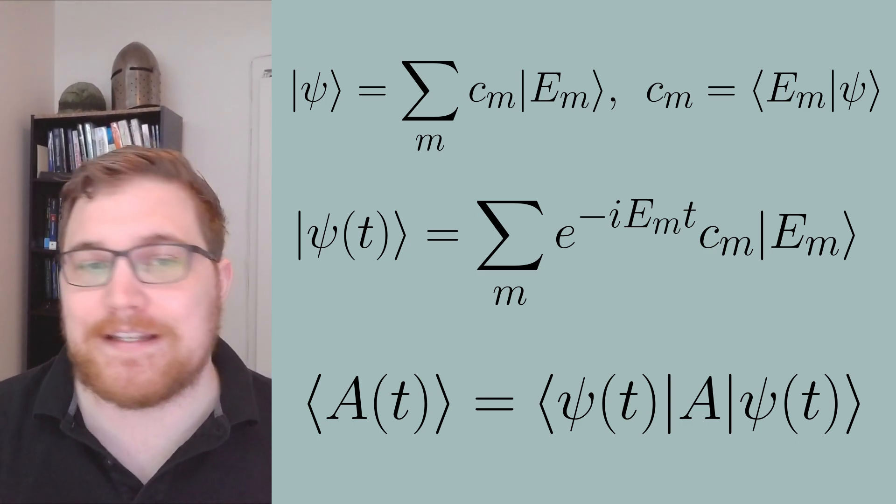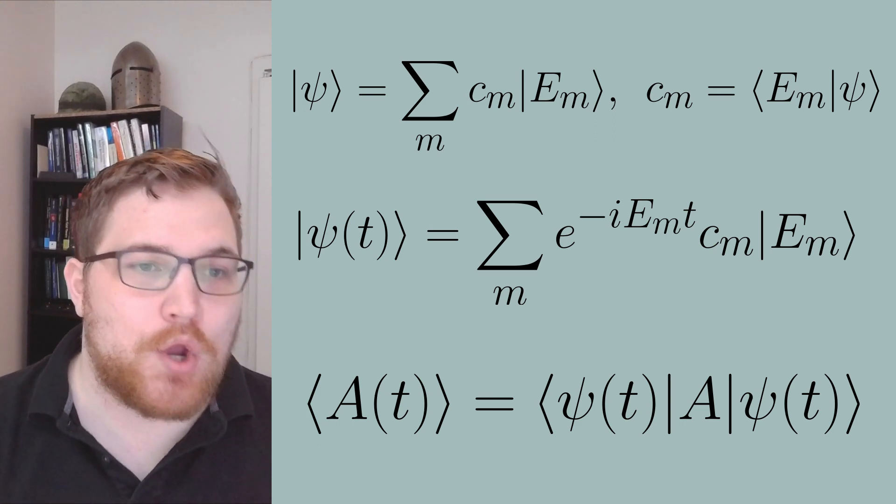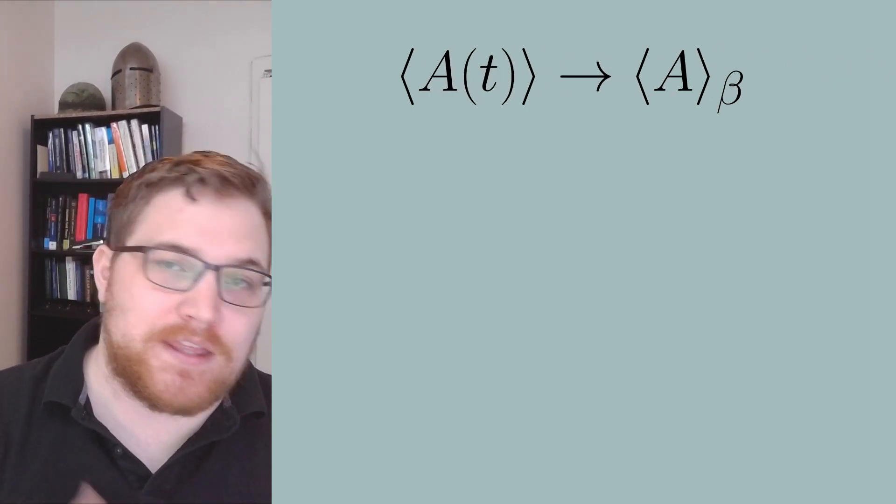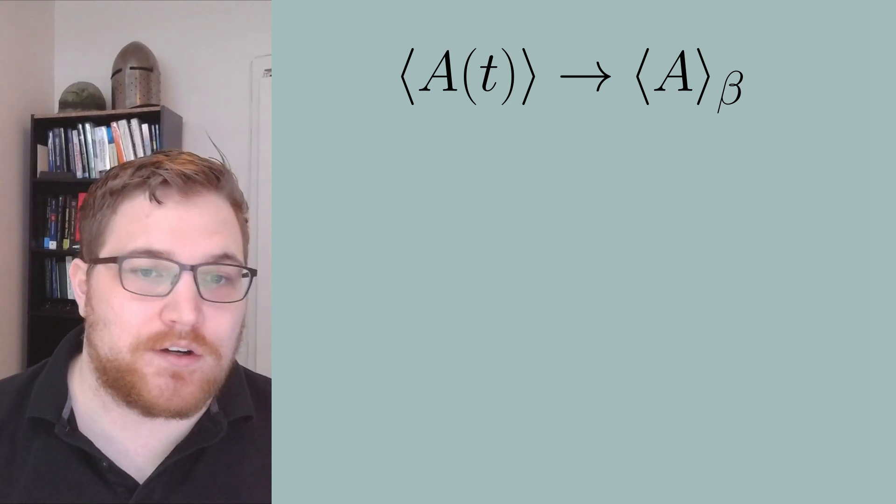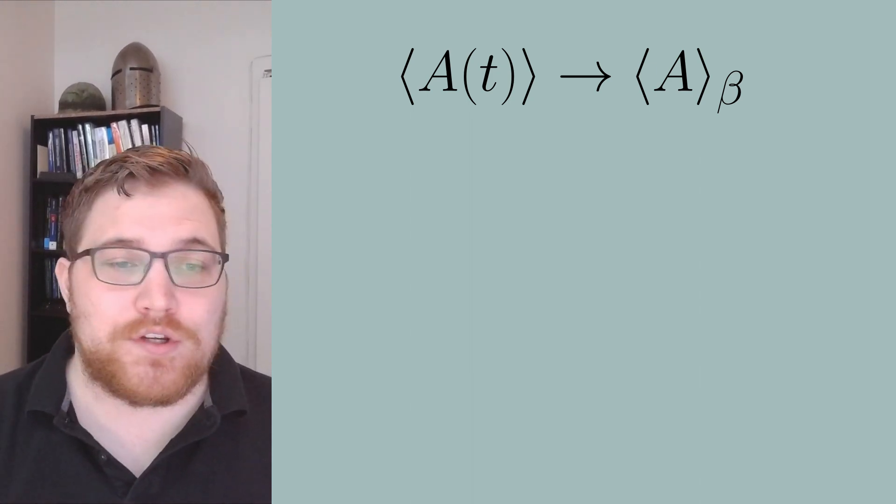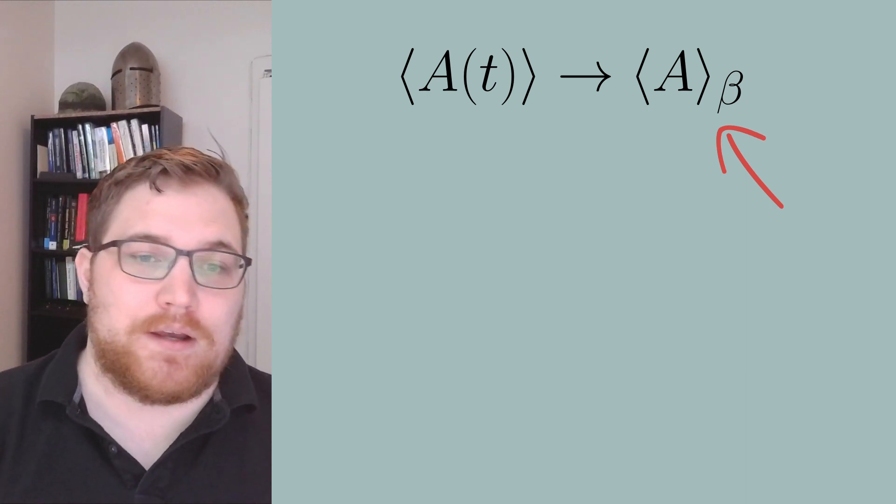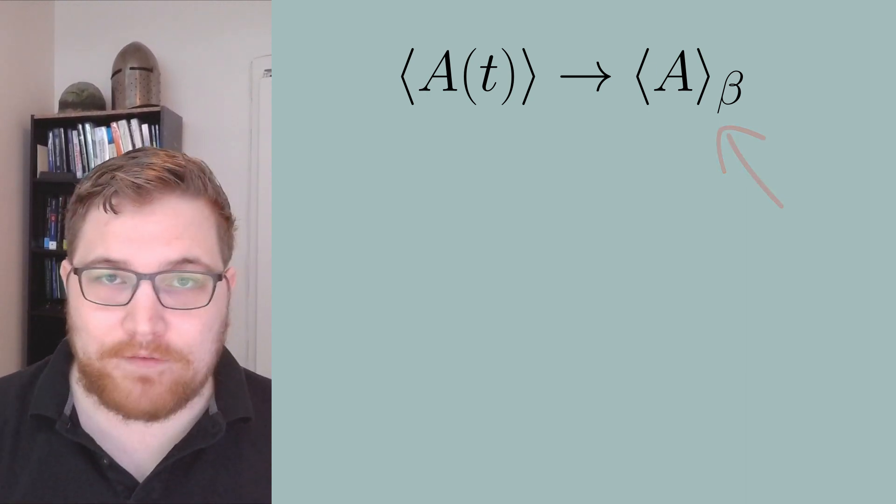In the video on the eigenstate thermalization hypothesis, we were wondering how an observable's expectation value could possibly flow to an equilibrium value that reflected the averages we do in statistical mechanics. Where here in this equation, the expectation value with the subscript beta is just the microcanonical or canonical average.